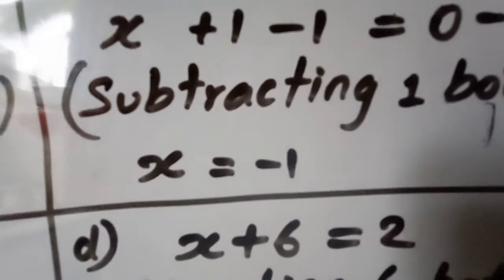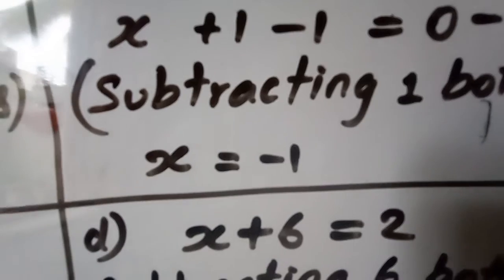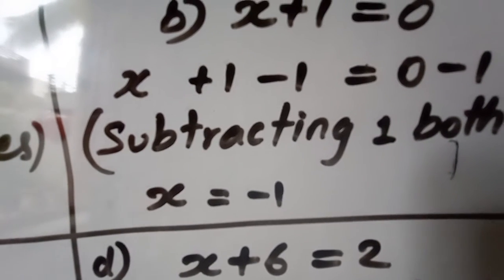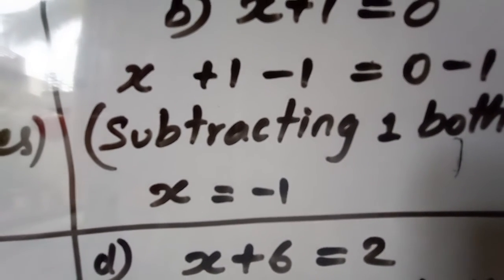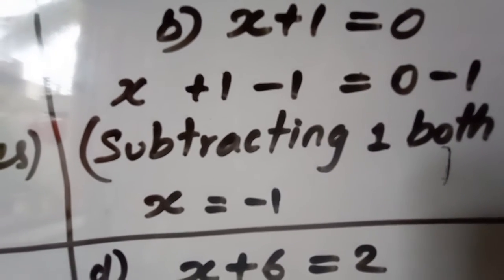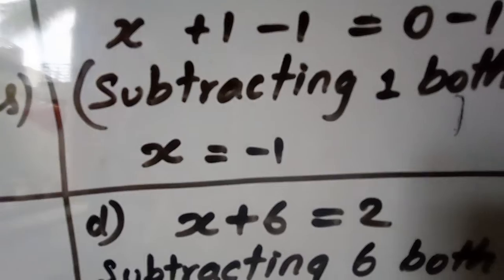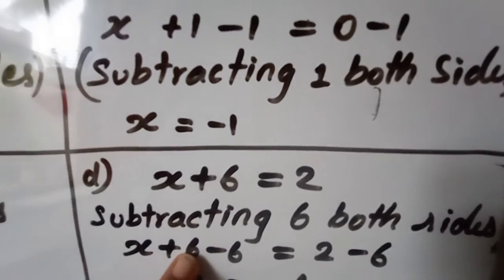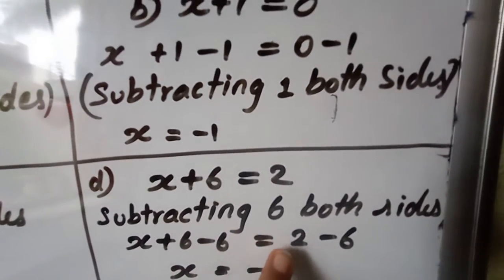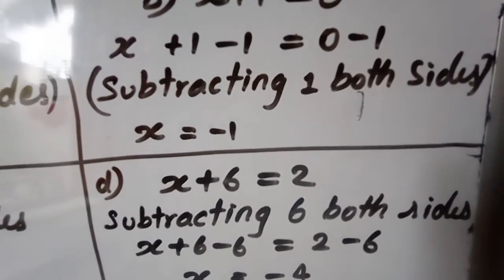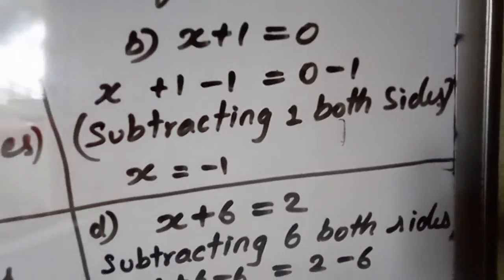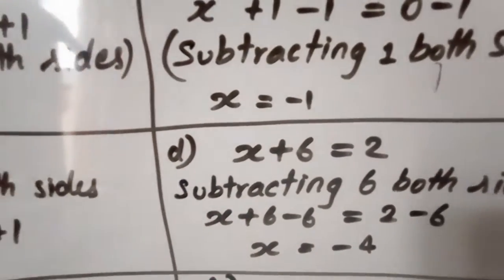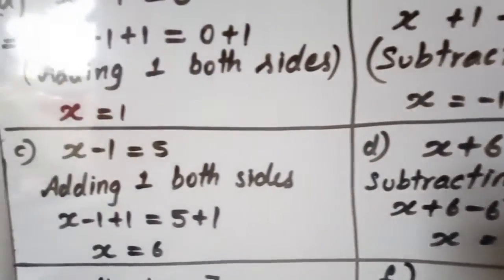Question D: x plus 6 is equal to 2. Here plus 6 is there. If we subtract 6 from both sides, we will get only x. Subtracting 6 from both sides: x plus 6 minus 6 equals 2 minus 6. This gives x is equal to minus 4, because the greater value carries the minus sign.